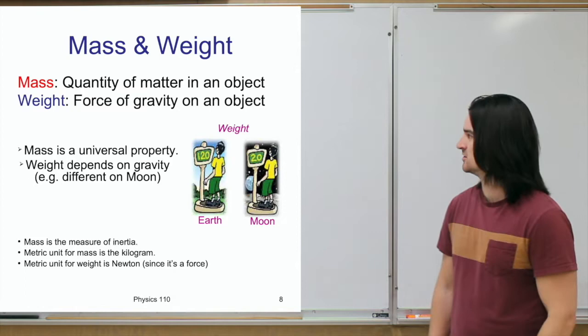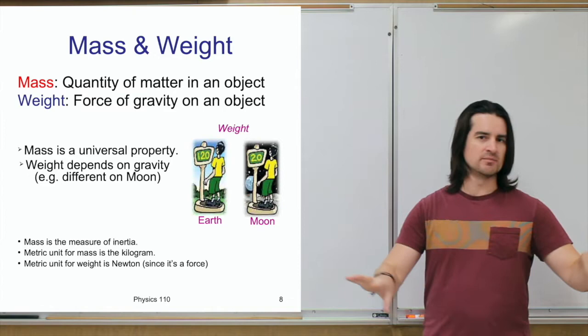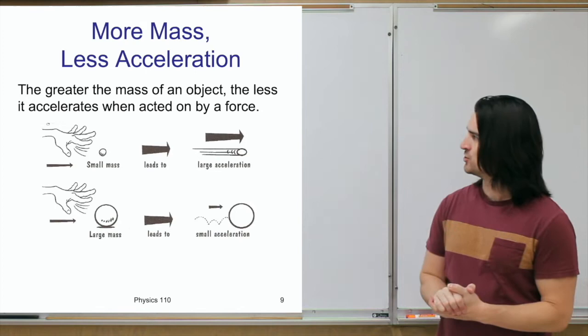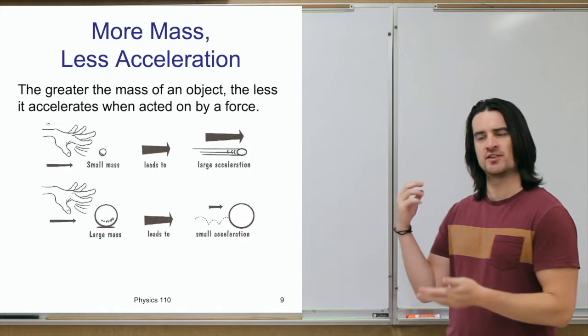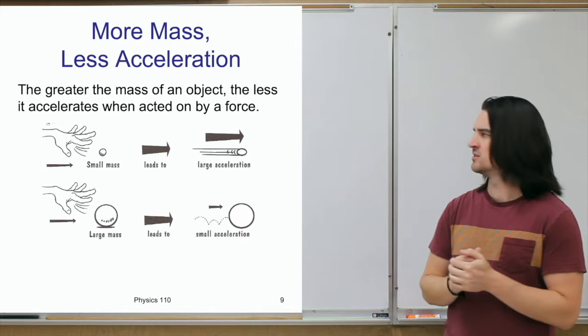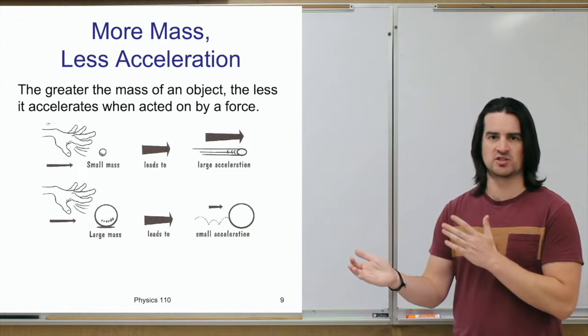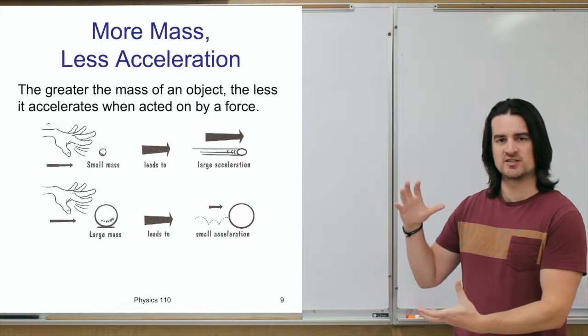So mass and weight are two different things — they're related because the force of gravity and your mass together determine your weight. Mass comes into Newton's second law too. If you apply the same amount of force to different objects — say 10 newtons — a very small mass will experience a very large acceleration, while applying 10 newtons to a much larger mass will lead to a much smaller acceleration.